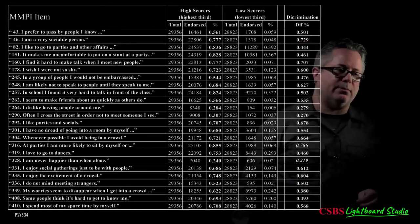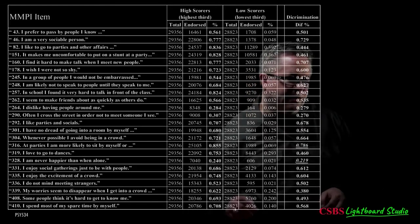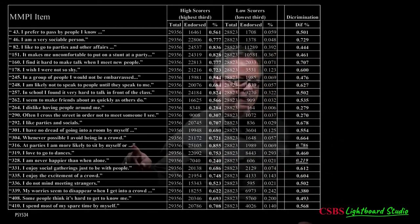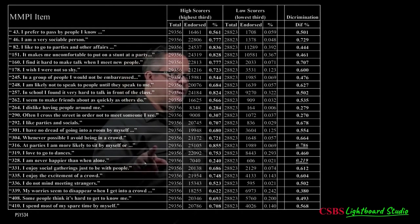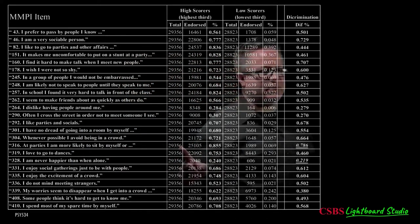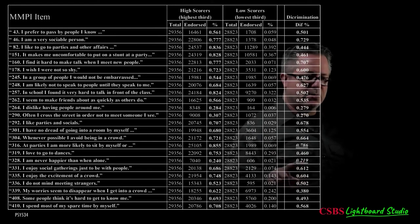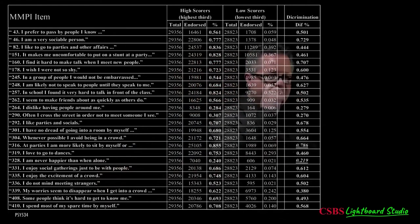Looking at which item is most discriminating: it's the one with a difference of 0.786 — something like 'I'm more likely to sit by myself or with just a few other people.' Among people high in social anxiety, 86% endorse it; among those low, only about 7%. That's a very large difference. The least discriminating item is 'I'm never happier than when alone,' with a very low difference.